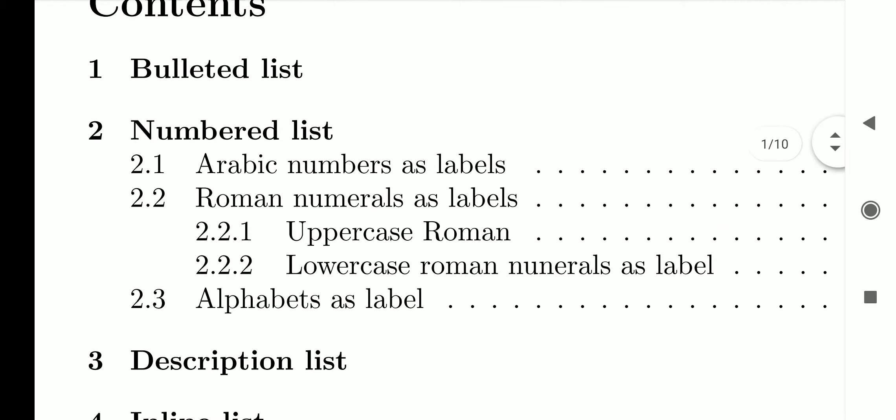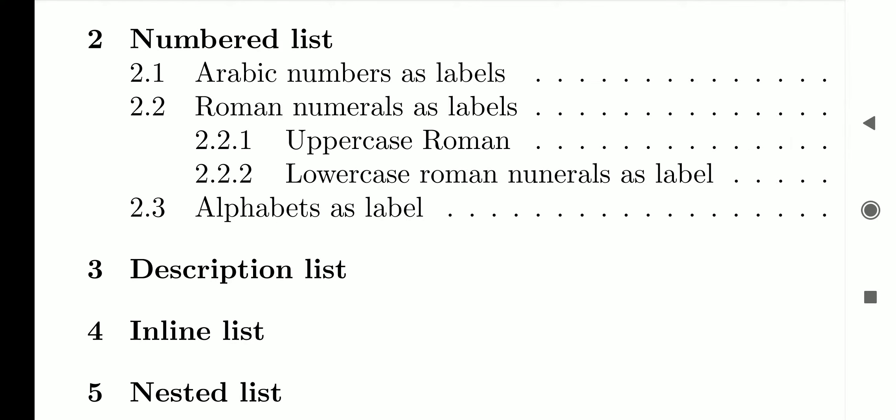The first list we will see is the bulleted list. The second is the numbered list, which can have Arabic numbers or Roman numbers as labels — either uppercase or lowercase Roman numerals. We can also have alphabets as labels. Then there is the nested list. The description list is also there — sometimes you need to describe items, and such lists are obtained using the description list environment.